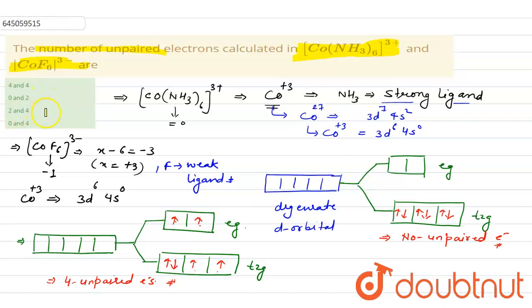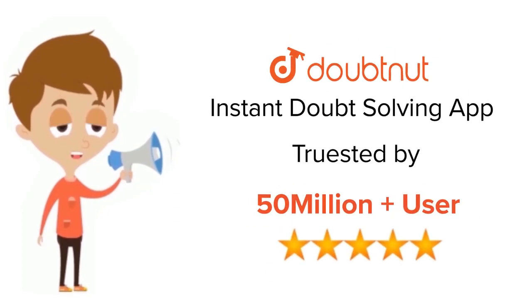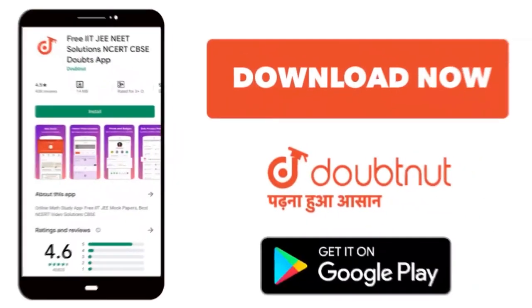So now let's see the options. The first option is four and four—it is wrong. Zero and two—it is wrong. Two and four—it is wrong. Zero and four: zero unpaired electrons are present in the first complex, and in the second complex there are four unpaired electrons, so option fourth is the correct answer. Thank you so much. For class 6 to 12th, IIT, and NEET level, trusted by more than 5 crore students, download Doubtnut app today.